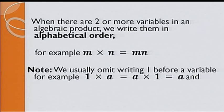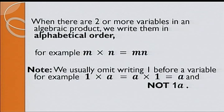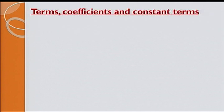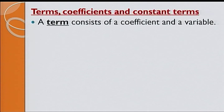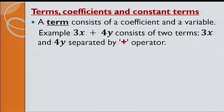Let's have a look at terms, coefficients, and constant terms. A term consists of a coefficient and a variable. For example, 3x plus 4y consists of two terms, 3x and 4y separated by plus operator. The number placed before a term is called the coefficient of that variable.